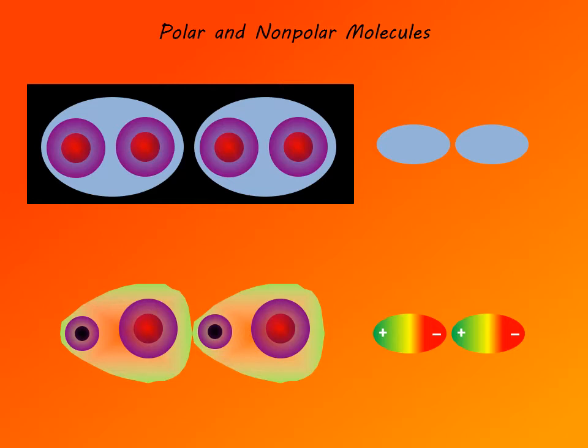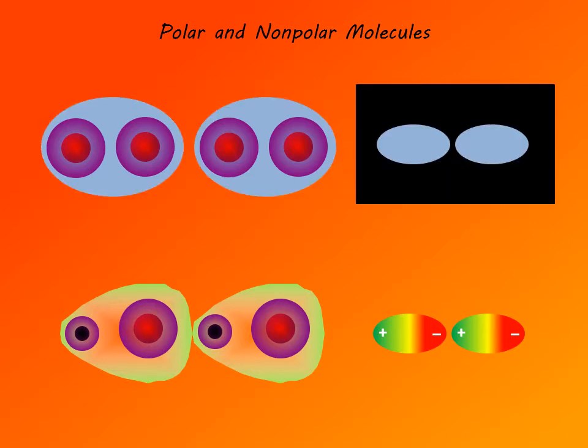Since the two atoms are either identical or have very similar electronegativities, there is no distortion of the electron cloud. And if the electron cloud is not distorted, there is no charge separation, so the molecules are nonpolar. The only intermolecular interactions that exist among such molecules are London interactions. Typically, we would represent such a nonpolar molecule simply as two electron clouds without any charge separation.